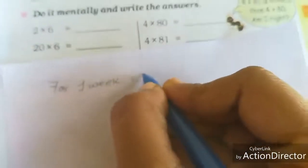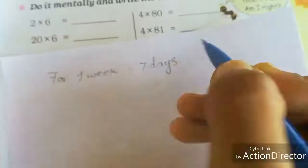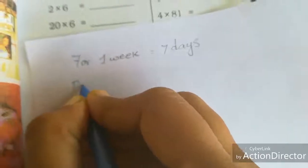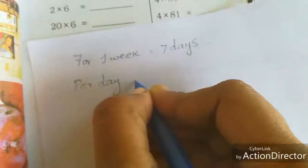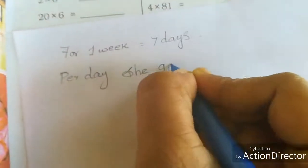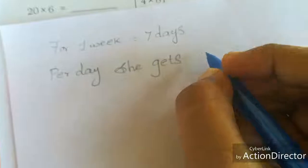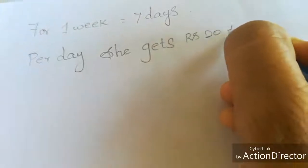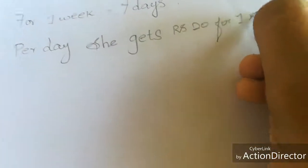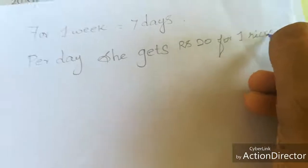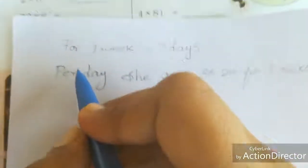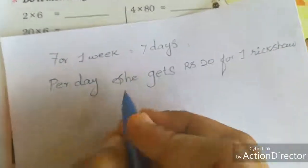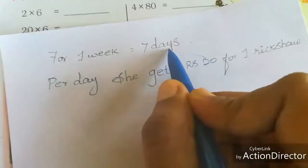For one week, that is equal to 7 days. Already we knew: per day, she gets rupees 20 for one rickshaw. So they asked, in a week, how much does Kiran earn from one rickshaw? So we want to multiply 20 into 7.